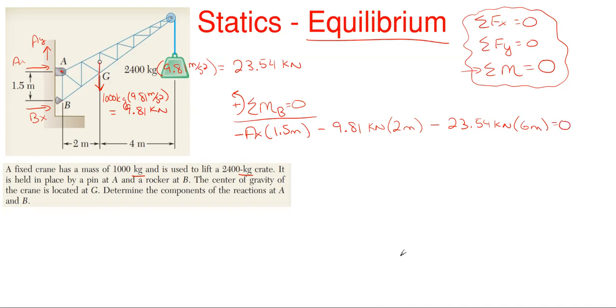As you can see in this moment equation the only unknown that I have is A sub x. Well, Ax is going to be minus 19.62 minus 141.24 all divided by 1.5. The 9.81 times 2 gives me 19.62 and the 23.54 times 6 gives me the minus 141.24.